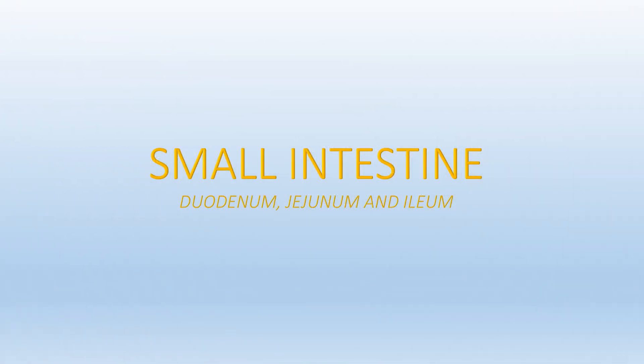The small intestine is a long narrow folded or coiled tube of the gastrointestinal tract that connects the stomach to the large intestine including the cecum. It is the region where most digestion and absorption of food takes place. In ruminant animals, the small intestine is located in a space known as the supraomental recess.